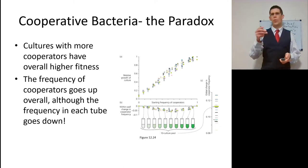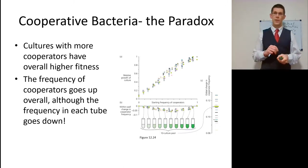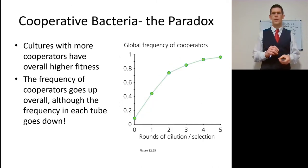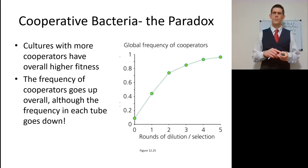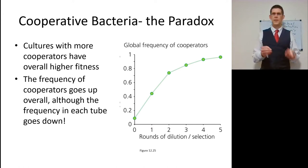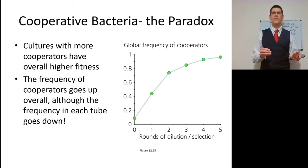Although in any one tube it is not good to be a cooperator when selfish bacteria are present, overall the cooperators win. This is why cooperative societies are adaptive — it's better to be a cooperator in a group of cooperators than to be selfish in a group of selfish.